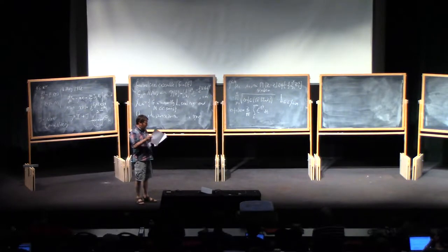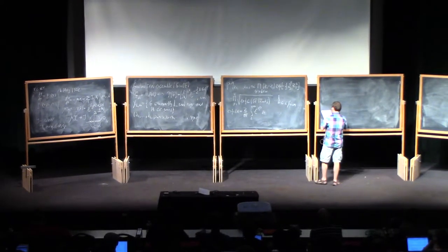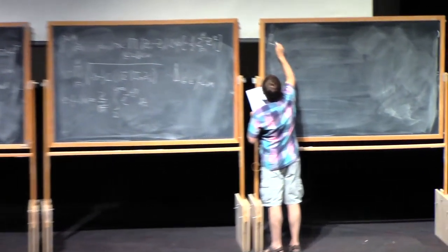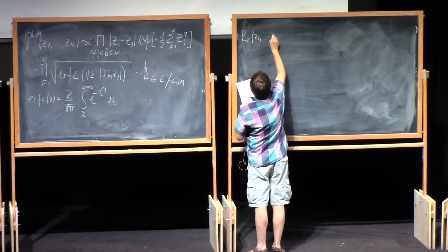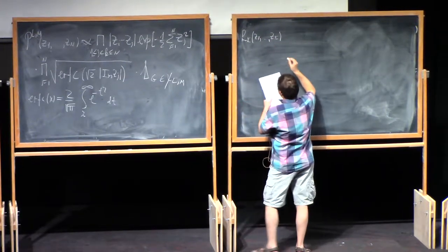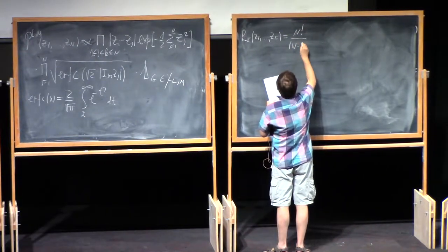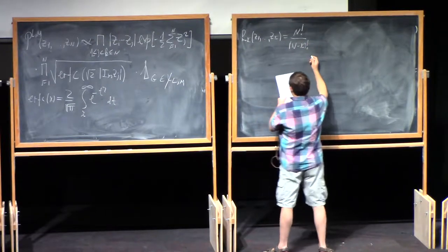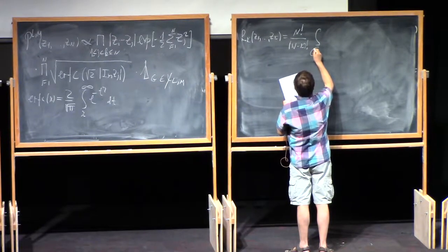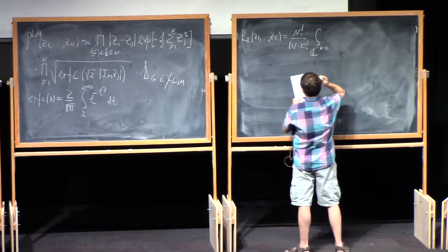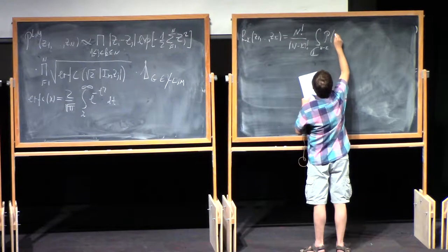These are very important objects. Let me introduce them — they are standard objects in random matrix theory. These are R_k depending on z_1 through k arguments, and they are given by n factorial divided by n minus k factorial, times the integral over n minus k copies of the complex plane over as many complex variables of this probability density.